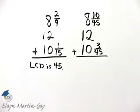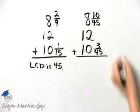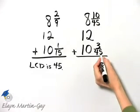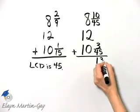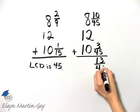And now we can go ahead and perform the addition. What is 10 over 45 plus 3 over 45? That is 10 plus 3, or 13 over 45.